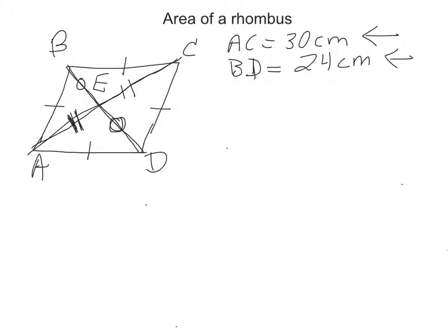So we know the measurements of both diagonals. The reason why that's important is the formula, one of the formulas for area of a rhombus is one half D1, D2. And the D1 just means your first diagonal and D2 is your second diagonal. And it doesn't matter which order they go into the equation.